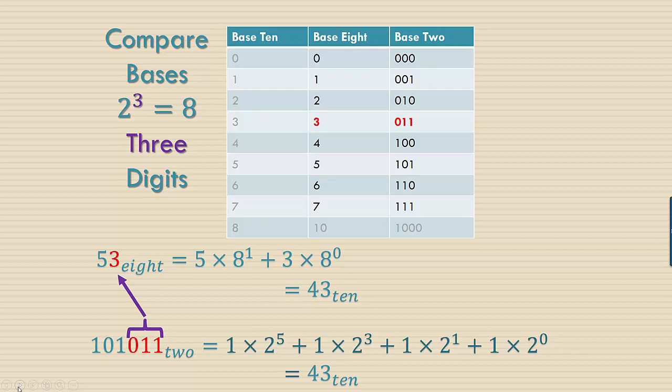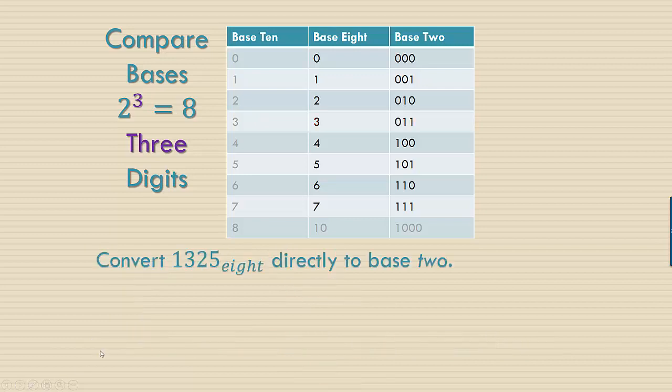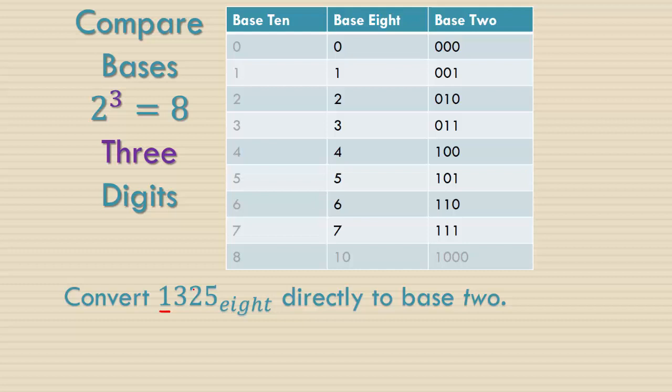This works whenever you have bases that are powers of each other. Let's go ahead and convert 1325 base 8 directly to base 2 using this idea that we have for each one digit in base 8 we have three digits from base 2. You would say the digit 1 in base 8 is going to be replaced with 001 in base 2. The digit 3 in base 8 is going to be replaced with 011 in base 2. The digit 2 in base 8 is going to be replaced with 010. The digit 5 in base 8 is going to be replaced with 101. And so this is the equivalent number in base 2.